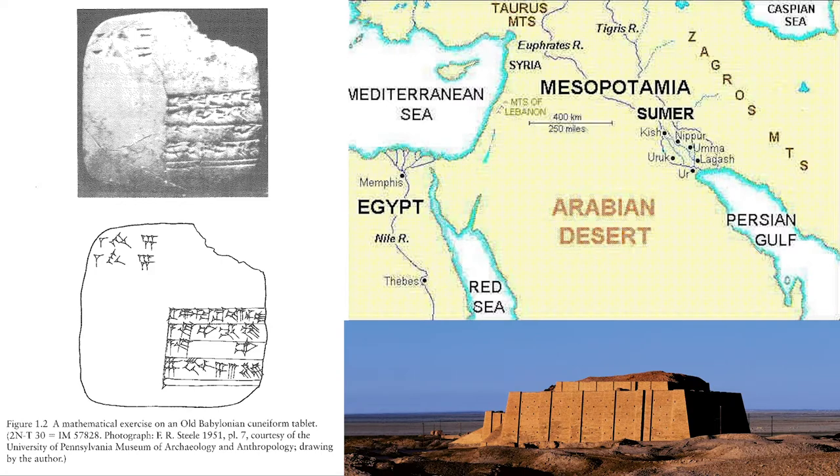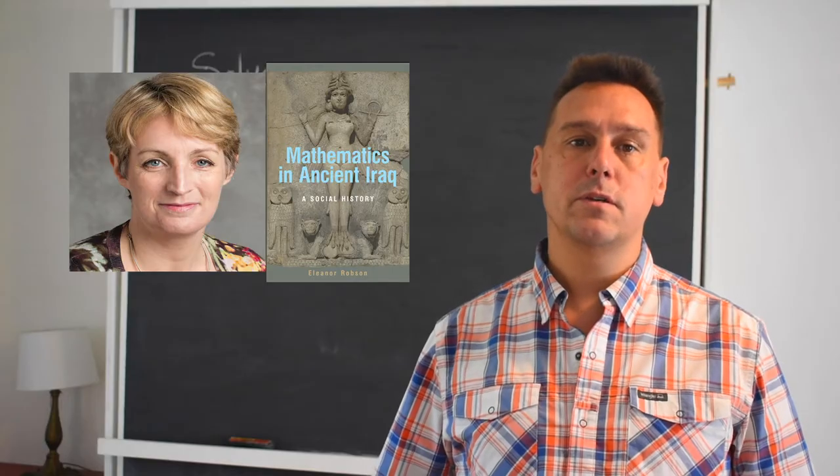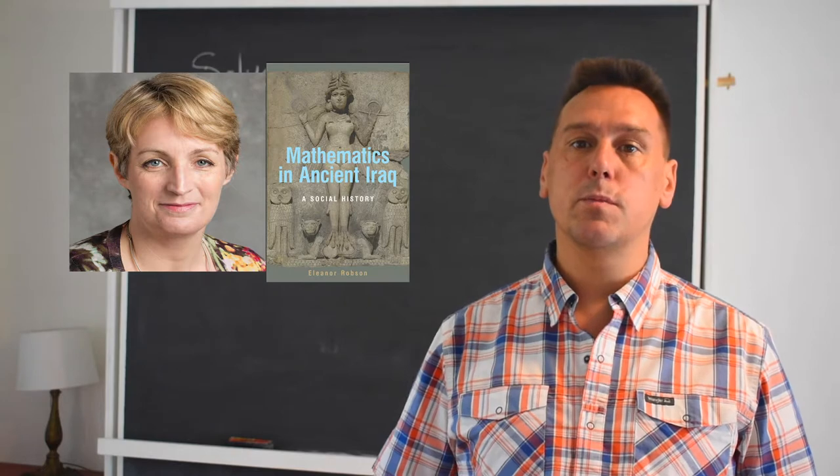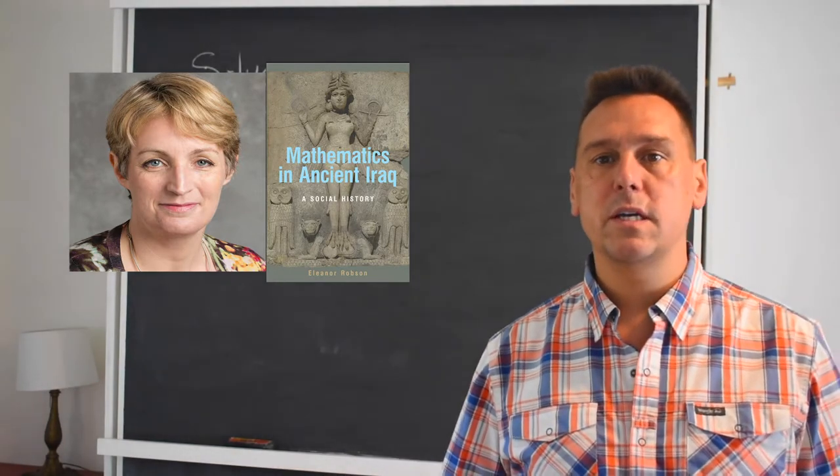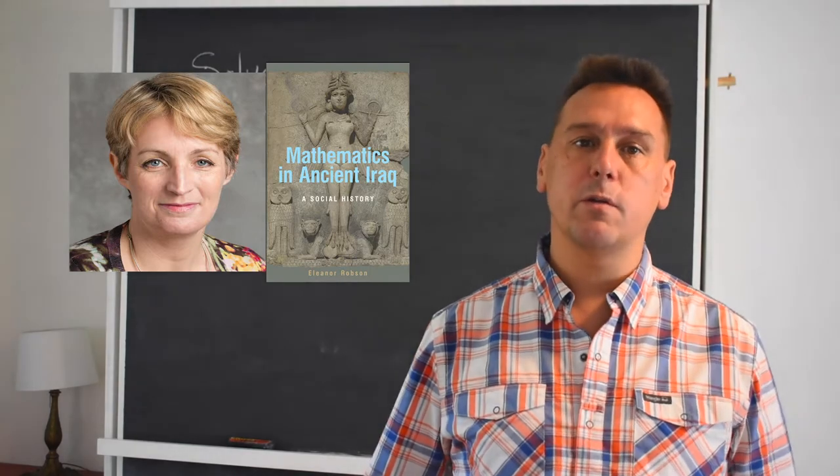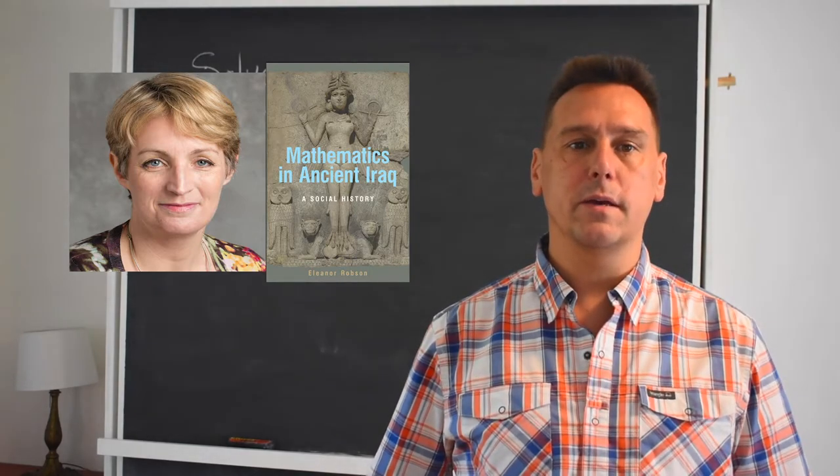It was found in the ancient city of Nippur, today in southern Iraq, in 1948, and it was created sometime in the 18th century BCE. Eleanor Robson uses this tablet in the beginning of her book, Mathematics in Ancient Iraq, to set up a number of her themes about the need to examine much more carefully what we think we know about ancient mathematics. And here's her translation of the tablet's contents.